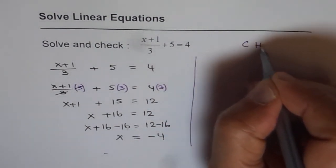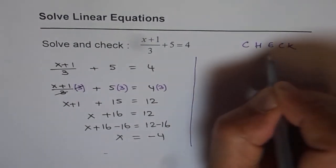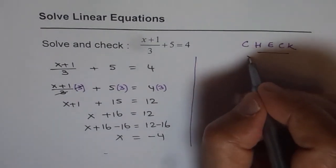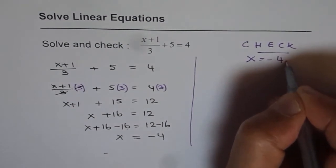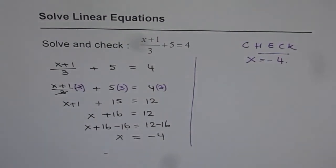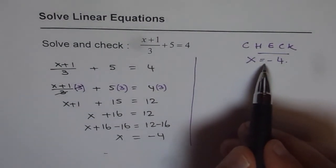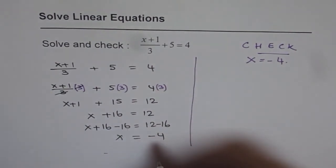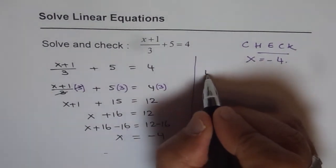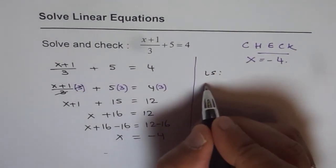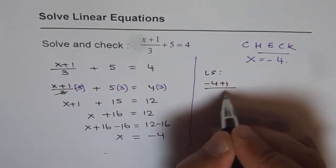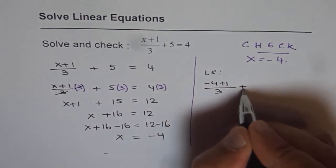Now let's check if it is correct. We're saying that our answer is x equals minus 4. To check this answer, we substitute x as minus 4 in the given equation. On the left side, we get minus 4 plus 1, divided by 3, plus 5.